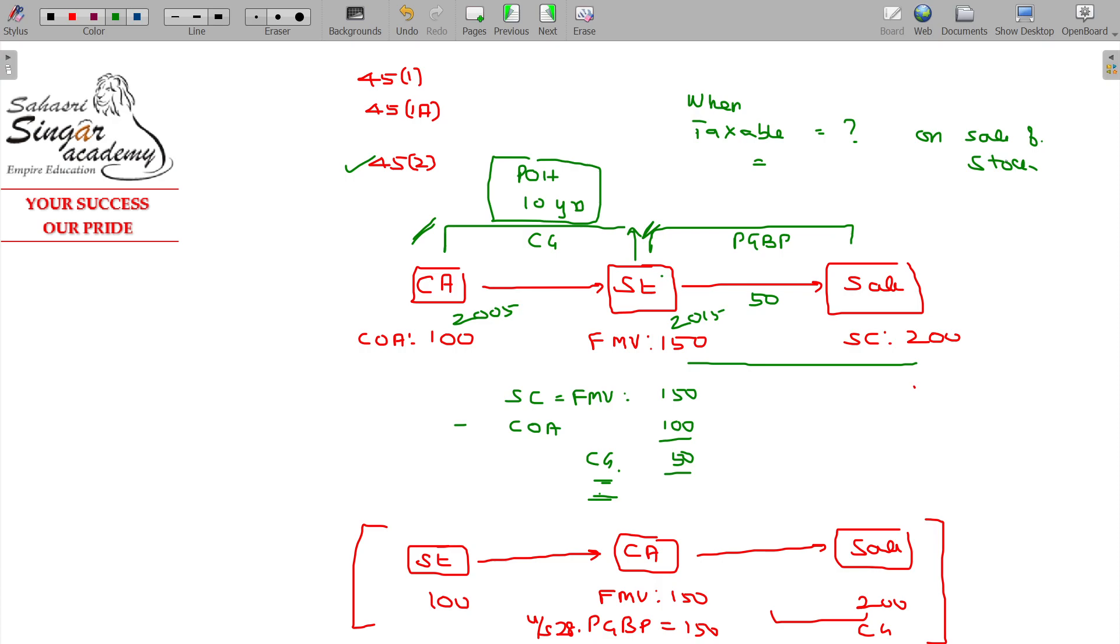But taxable only in the year of sale. Suppose the sale happens in previous year 22-23, then in the PGBP 50 is taxable, in the capital gains 50 is taxable. When is it taxable? Only in the year in which the stock is sold.